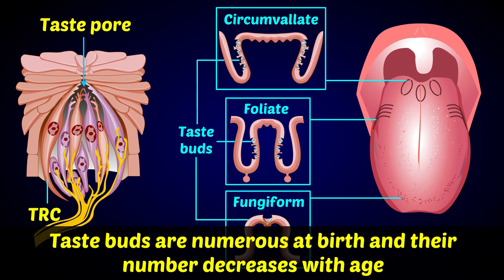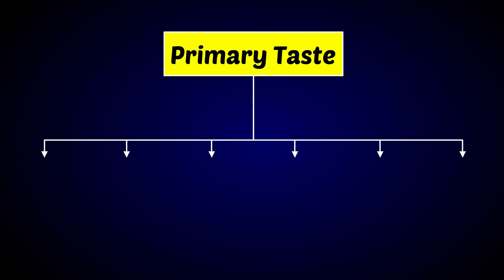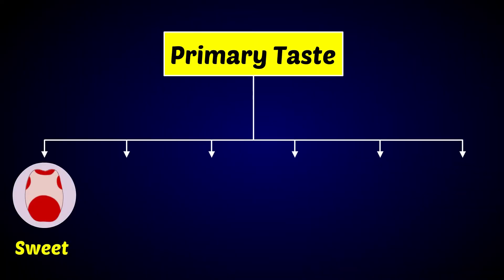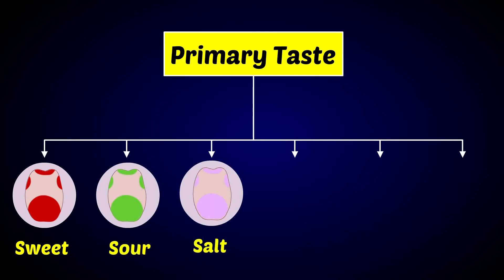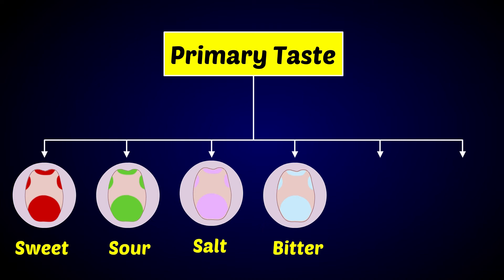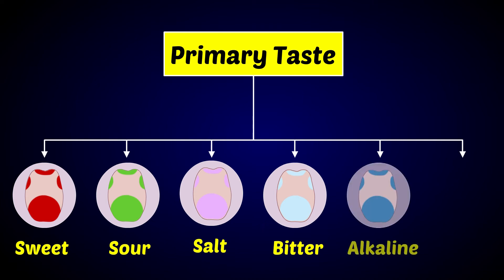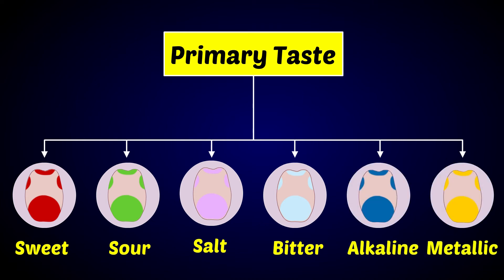Taste buds are numerous at birth and their number decreases with age. The primary tastes include sweet, sour, salt, bitter, alkaline, and metallic.